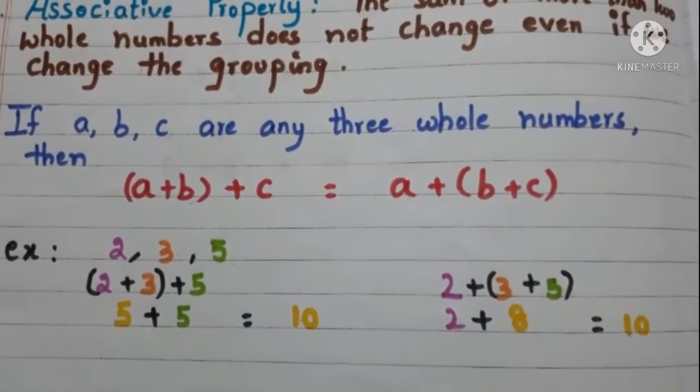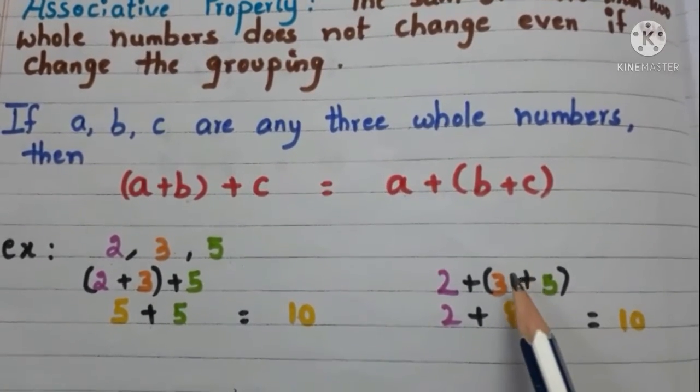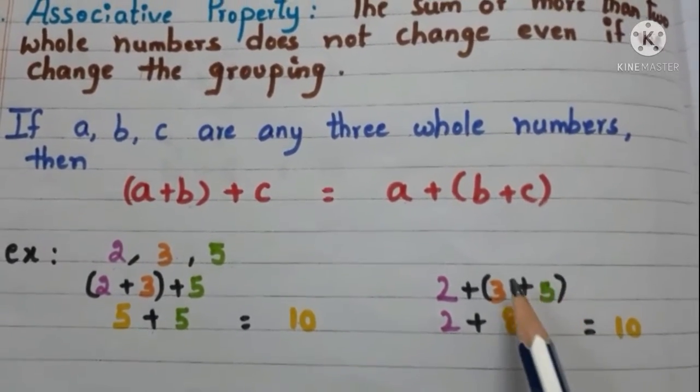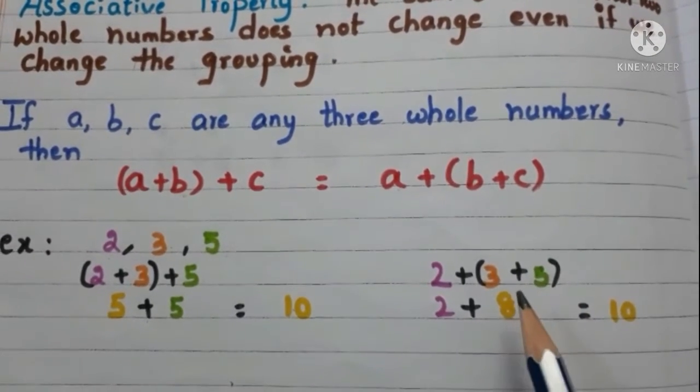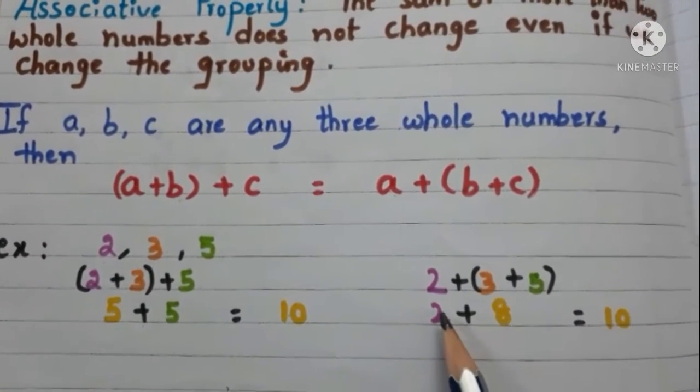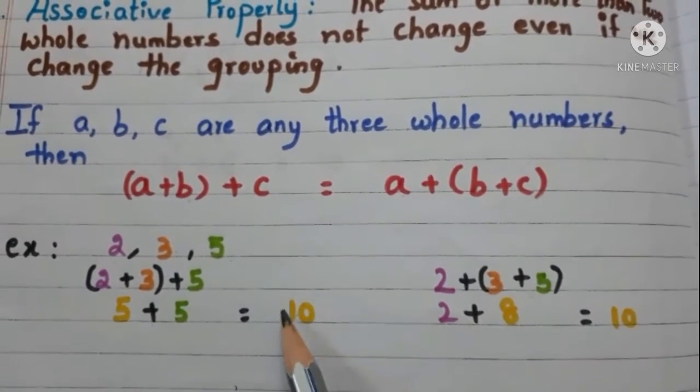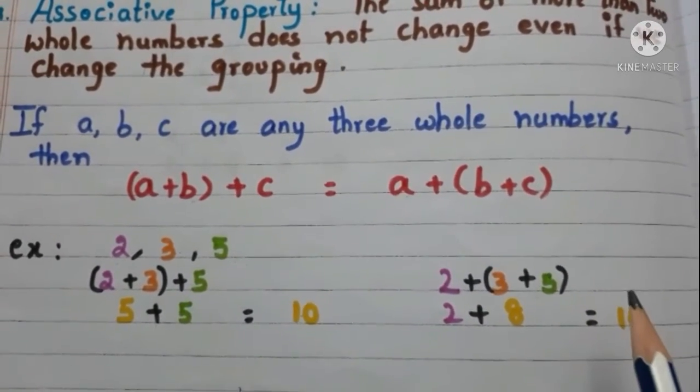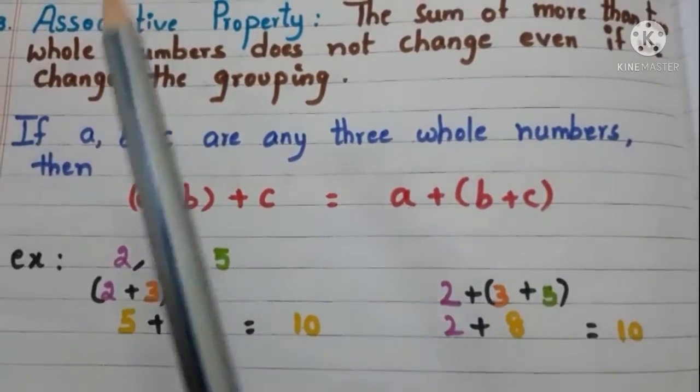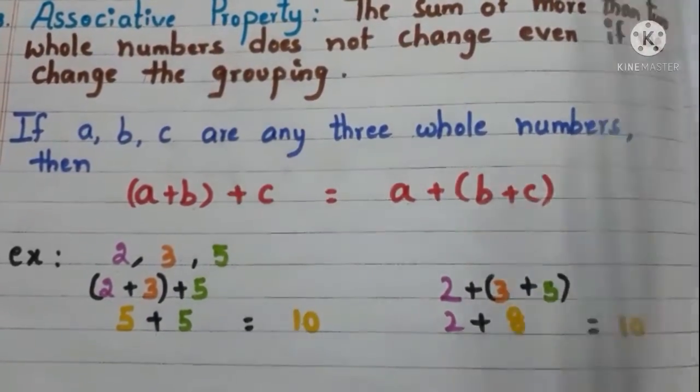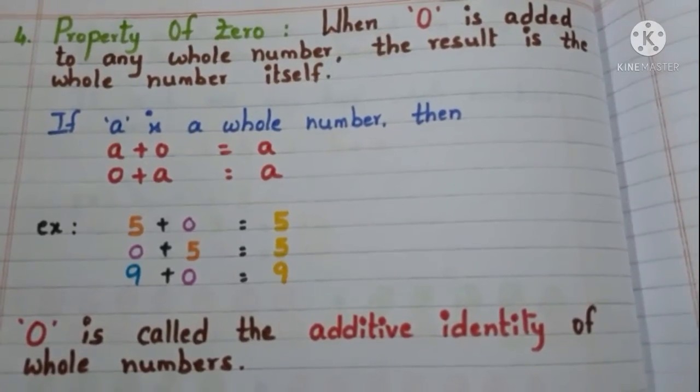Now change the grouping. First add 3 and 5. 3 plus 5 is 8. Now add 2. 2 plus 8 is how much? 10. In these two cases the sum remains same. This property is called associative property.